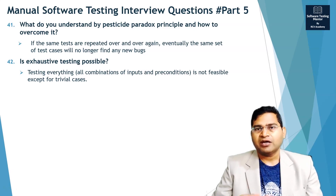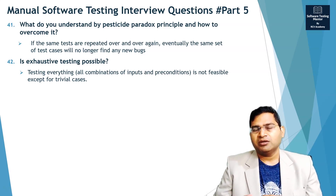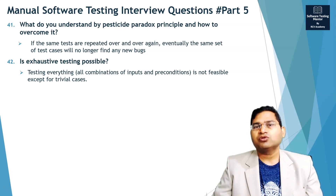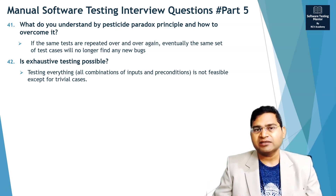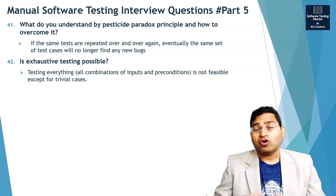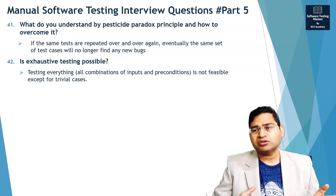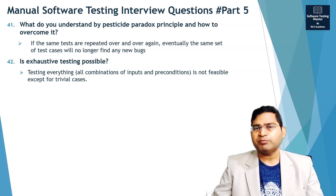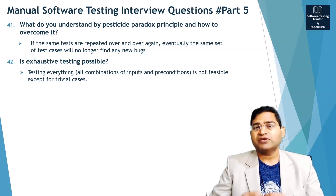For example, if you have a combination of inputs where the permutation gives you only 10 or 20 outcomes, yes, you can test all of those. But in real applications, the permutation combination is usually massive — thousands and thousands of combinations.